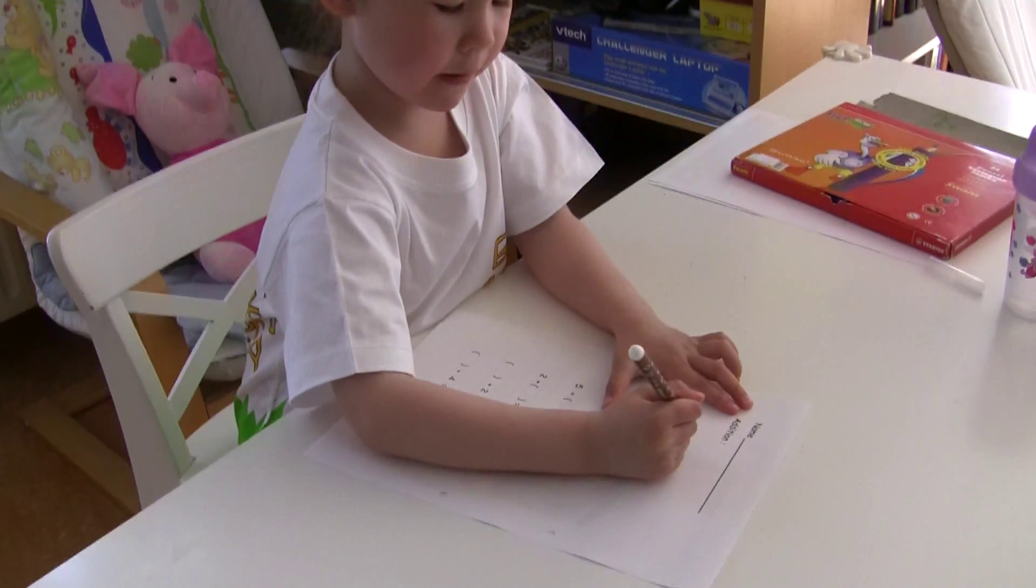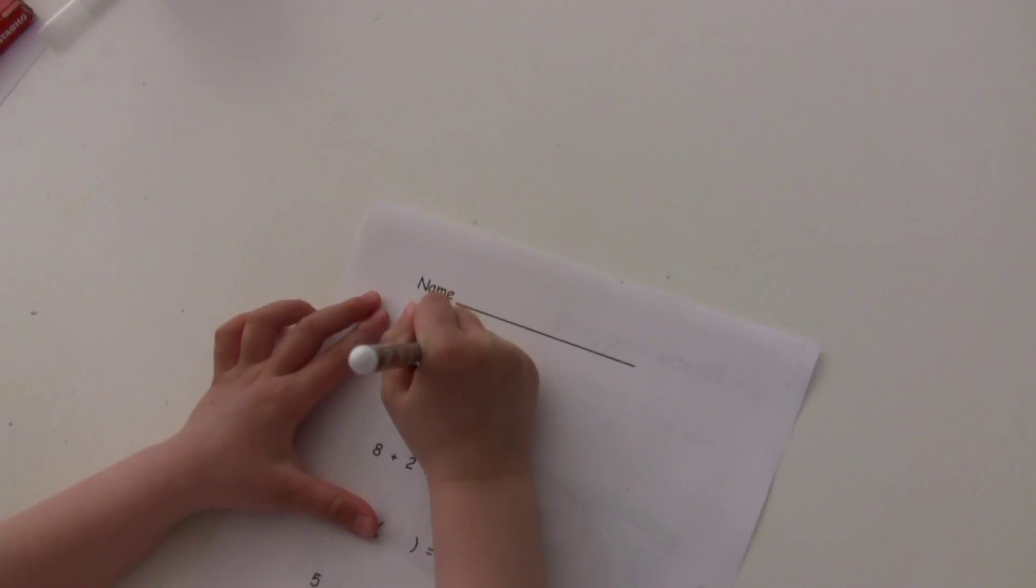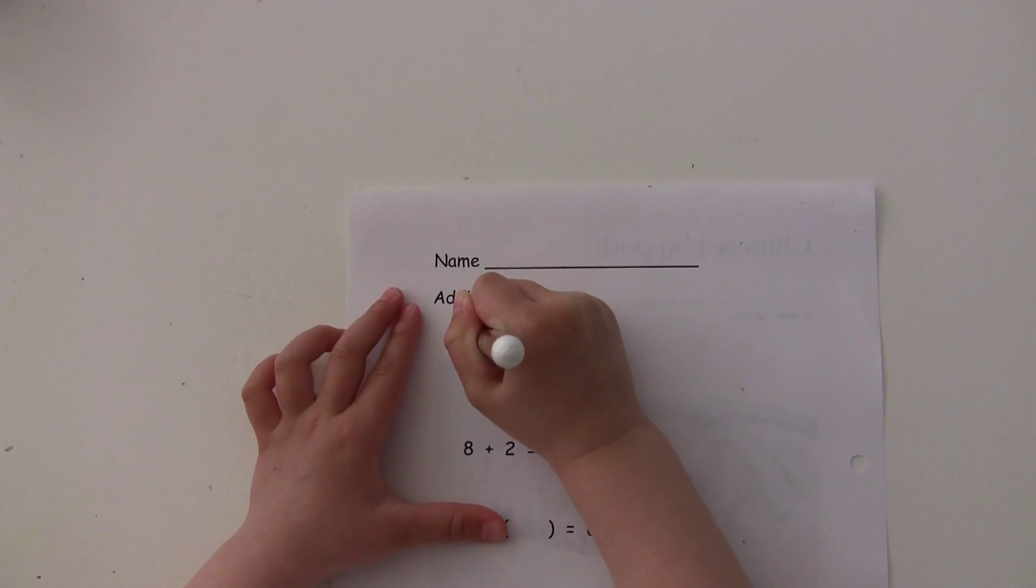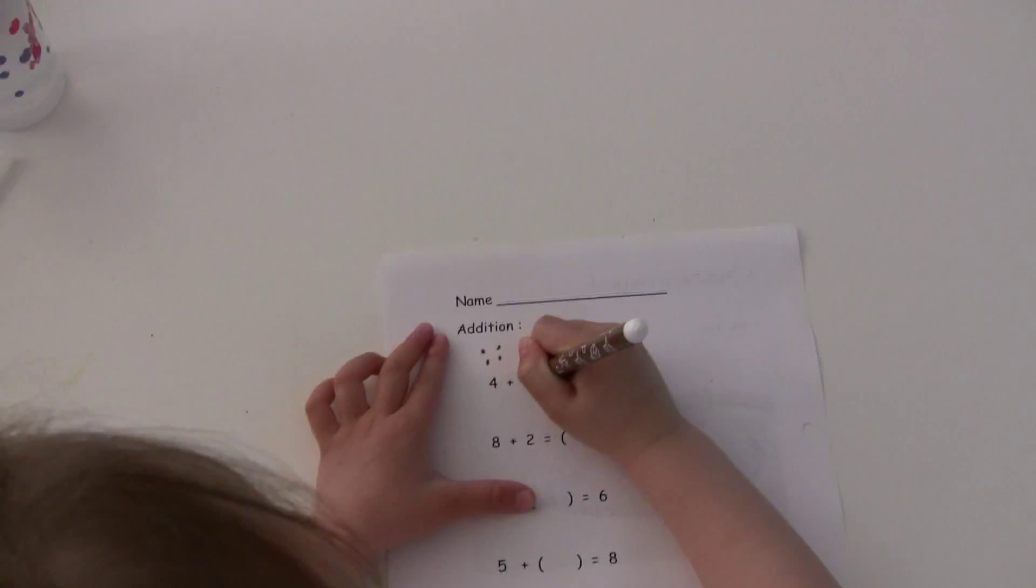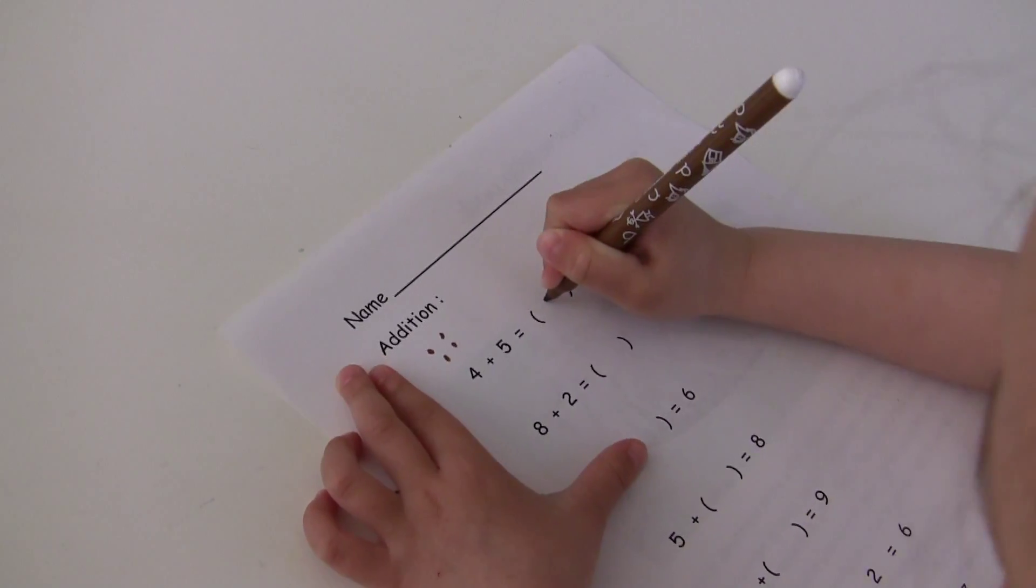4 plus 1 equals 2. 1, 2, 3, 4. Okay. Say 5, 6, 7, 8, 9. So 9.